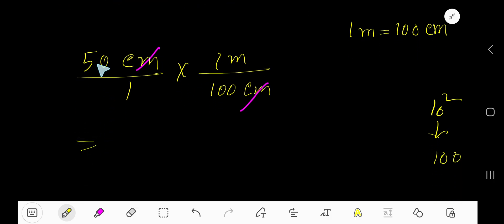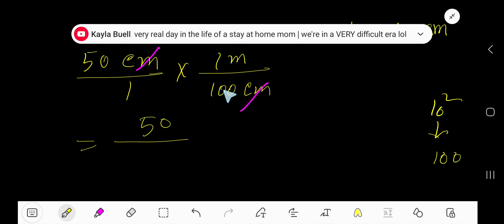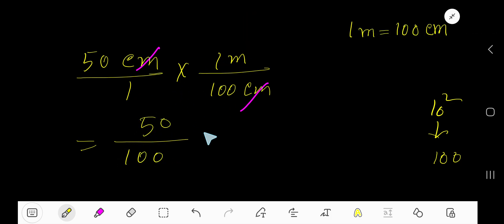Now multiply 50 times 1, which is 50. 1 times 100, which is 100 meters.